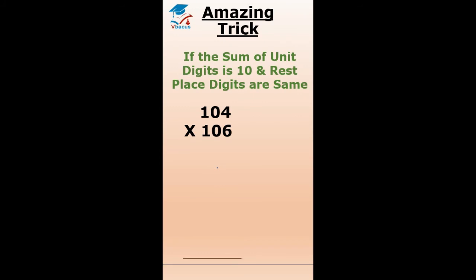Let us take one more example: 104 times 106. Multiply the unit digits: 4 into 6 is equal to 24. Write 24 here, and multiply 10 to its next number, that is 11. So 10 times 11 is 110. This is your final answer: 11024.